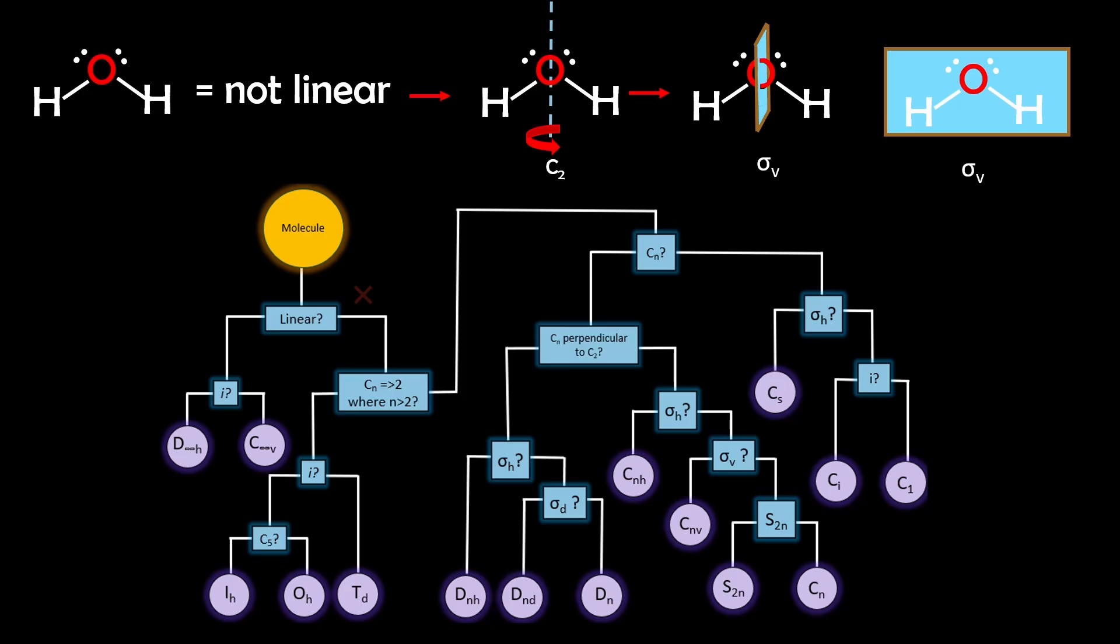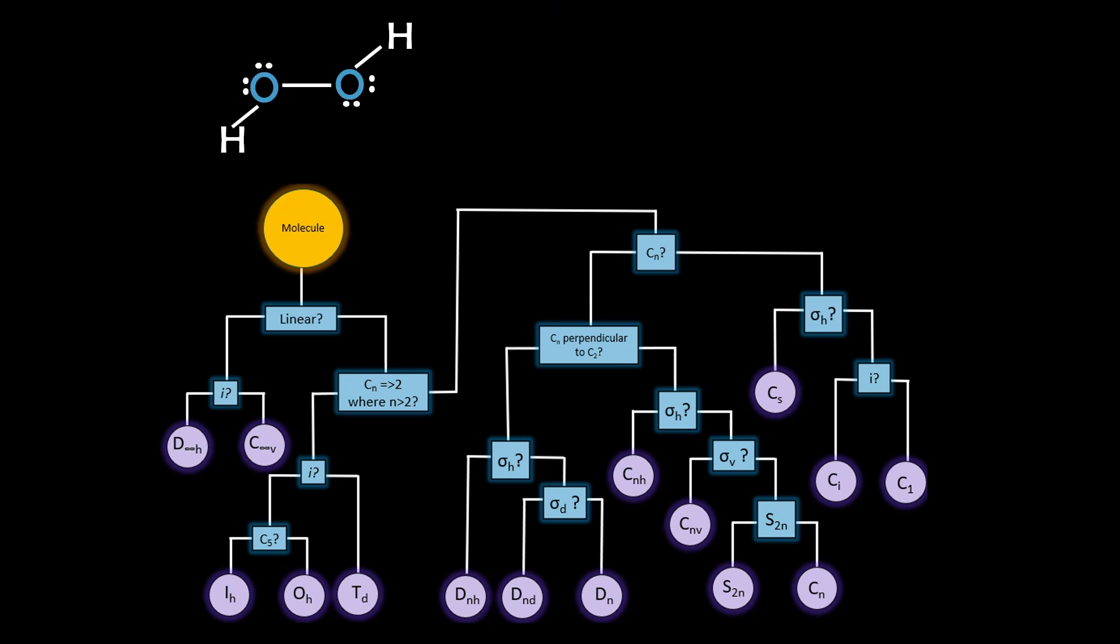So when using the chart, it's not linear, doesn't have any rotational axes higher than C2. It does have a C2 rotational axis, but no other Cn axis perpendicular to it. So there's no horizontal mirror plane, but there are two vertical or sigma V planes along the C2 axis. That makes it C2V.